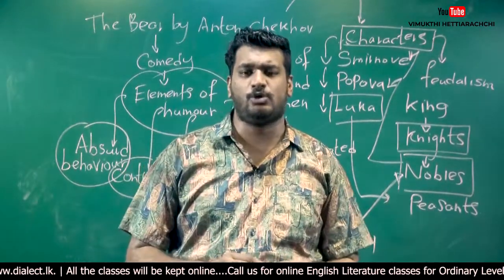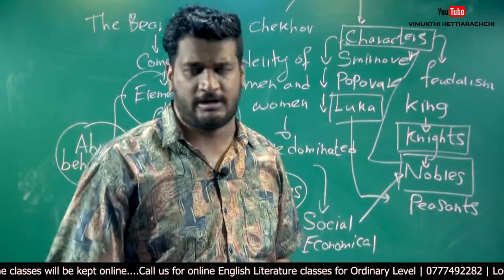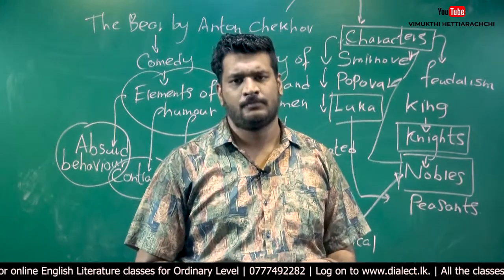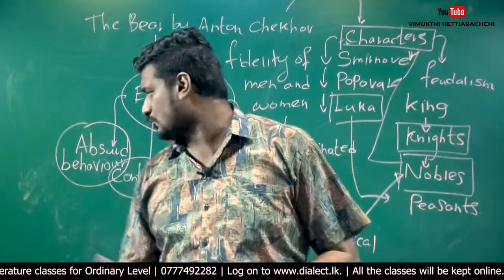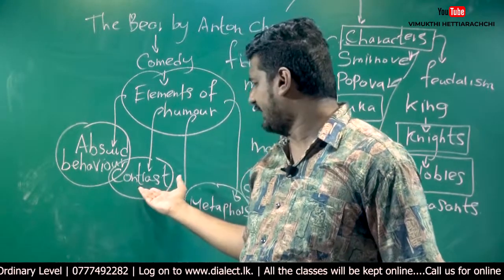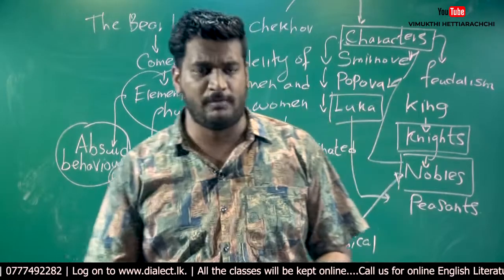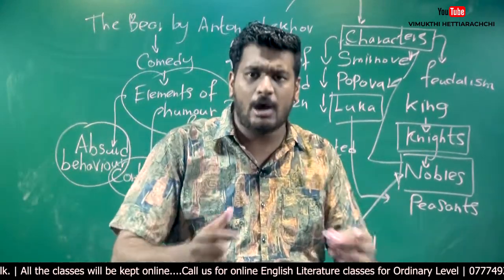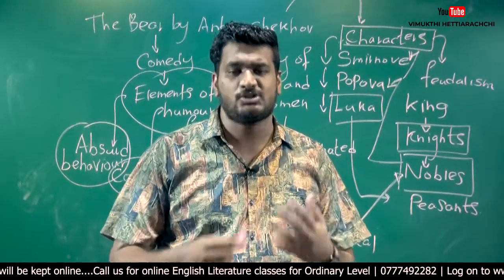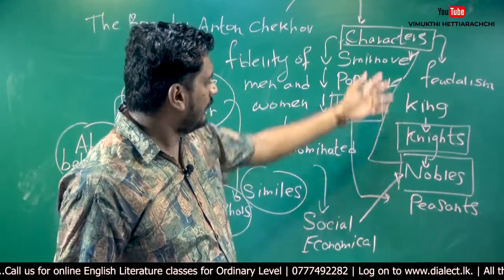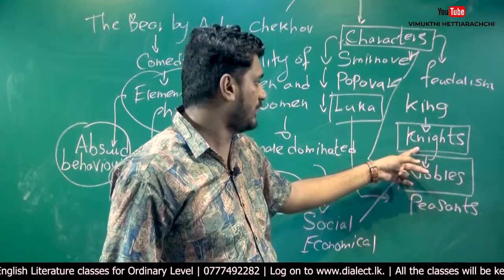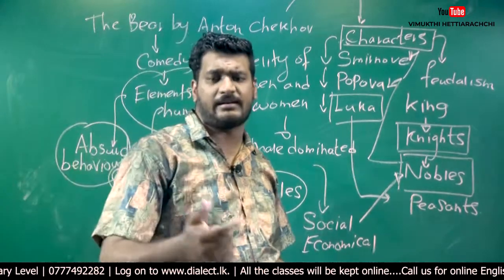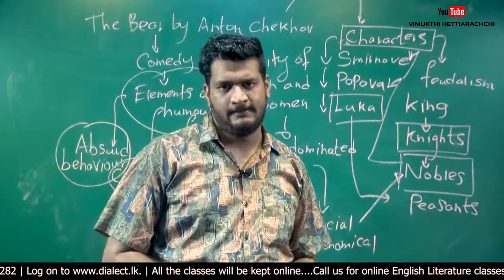I have only given you the mind map. What you have to do is keep all these points in mind — each point resembles a possible exam question. For example, regarding elements of humor, there can be a question: 'The Bear can be taken as a comic drama — comment on the statement with relevant examples.' You must give examples under absurd behavior, contrast, and the beautiful metaphors used in the drama. Read the script carefully to identify similes and quotations. Regarding Russian society, we had kings, nobles, and peasants — study the characteristics of the nobles as well.